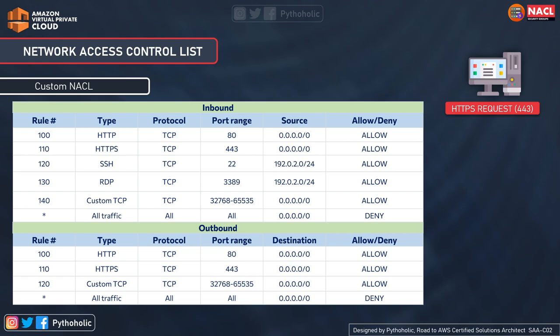The highest rule number you can use is 32766. AWS advises starting from 100 and incrementing by 10. Rules are evaluated from the lowest number upward, checking if the request is allowed or denied. Let's take an example: a user wants to access our instances over HTTPS with port 443. Let's see what the inbound and outbound rules look like for 443.